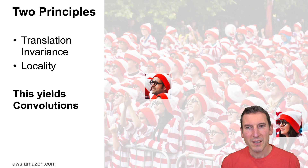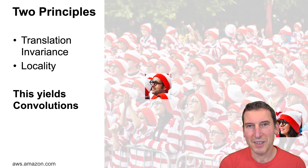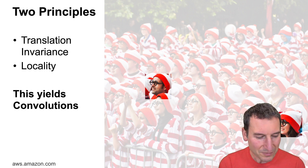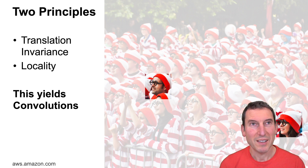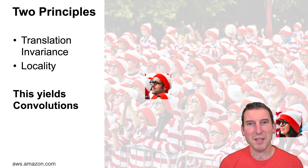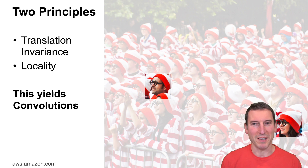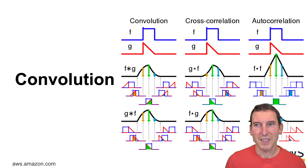If there's no Waldo in a region, it doesn't tell me where else Waldo might be — except that he's not there. It turns out that if you apply those principles — translation invariance and locality — to the formulation of a multilayer perceptron, then you get convolutions. There's more detail in the book, but suffice it to say: if you were an alien who had never talked to Yann LeCun or anyone else about ConvNets, you would still arrive at convolutional neural networks just by applying math. That's the beauty of it.